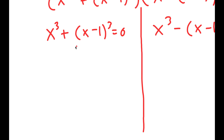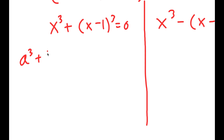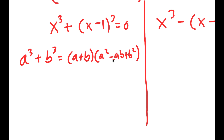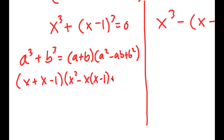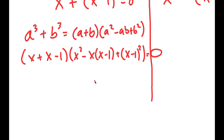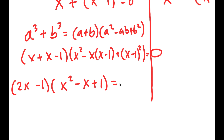To solve for my left-side equation, if I have something in the form a³ plus b³, this is equal to a plus b times a squared minus ab plus b squared. So in this case, I have x plus (x-1) times x squared minus x times (x-1) plus (x-1) squared, all equal to 0. And this turns into 2x minus 1 times x squared minus x plus 1 is equal to 0.